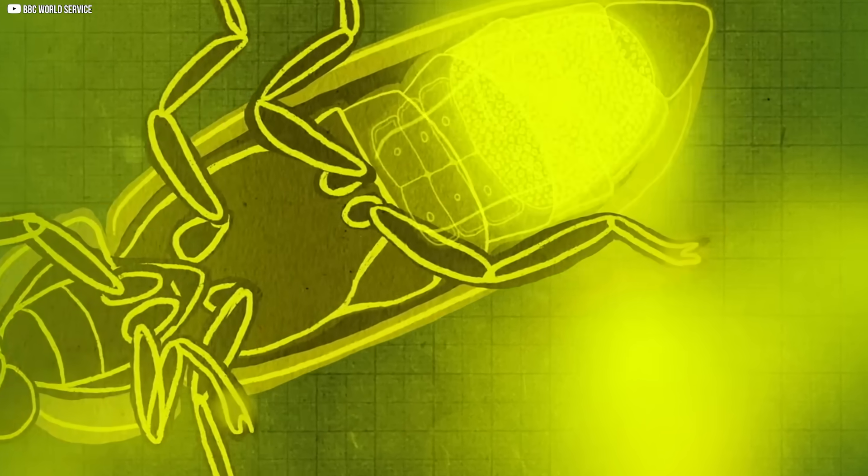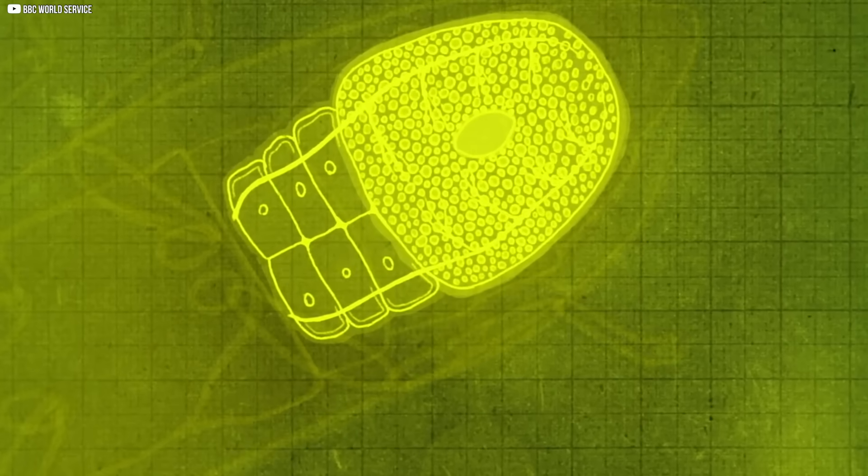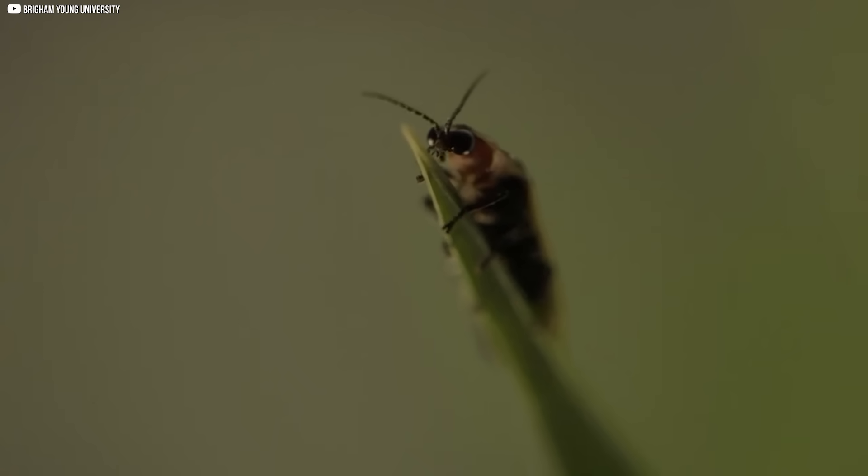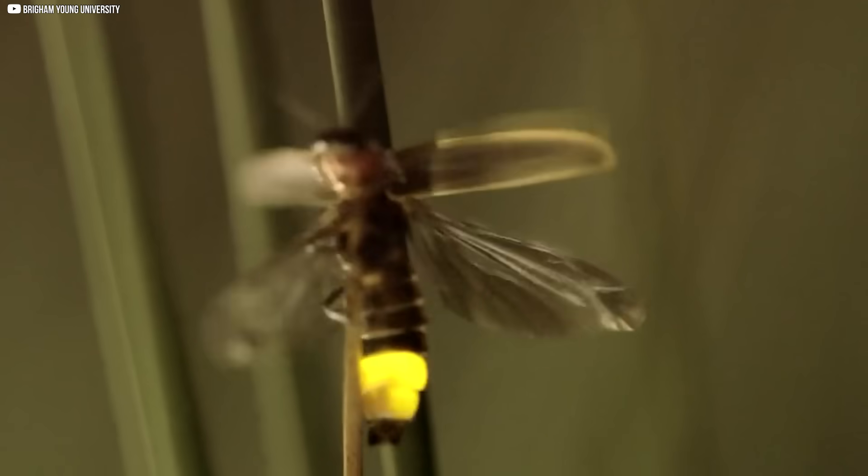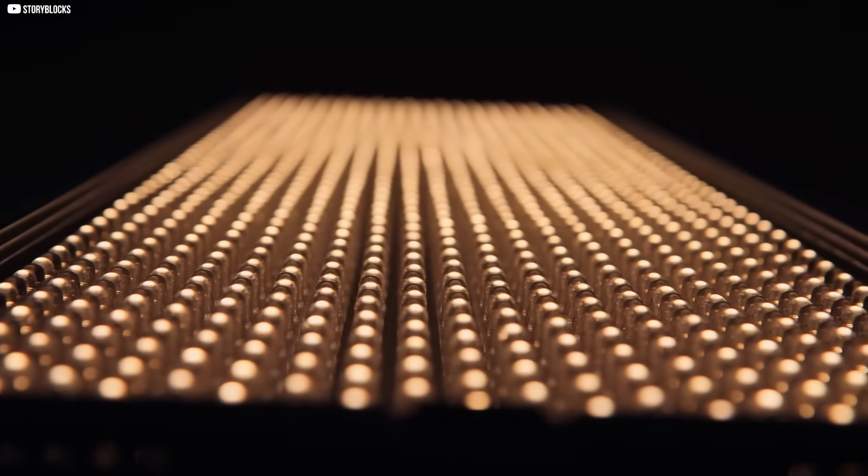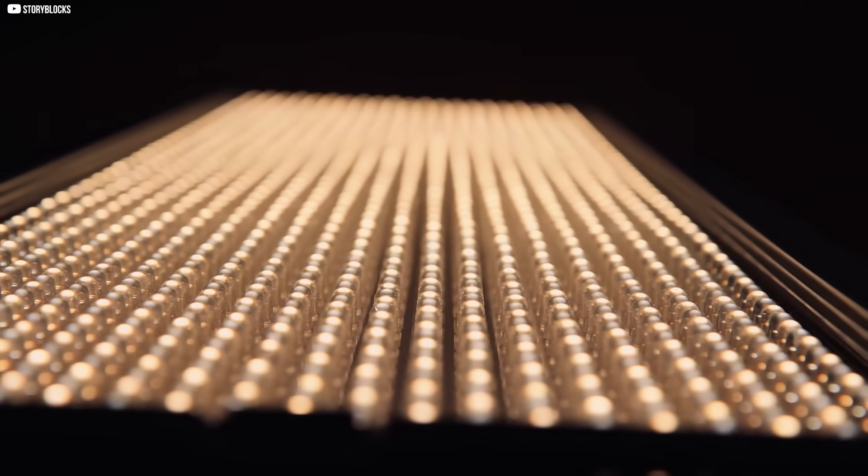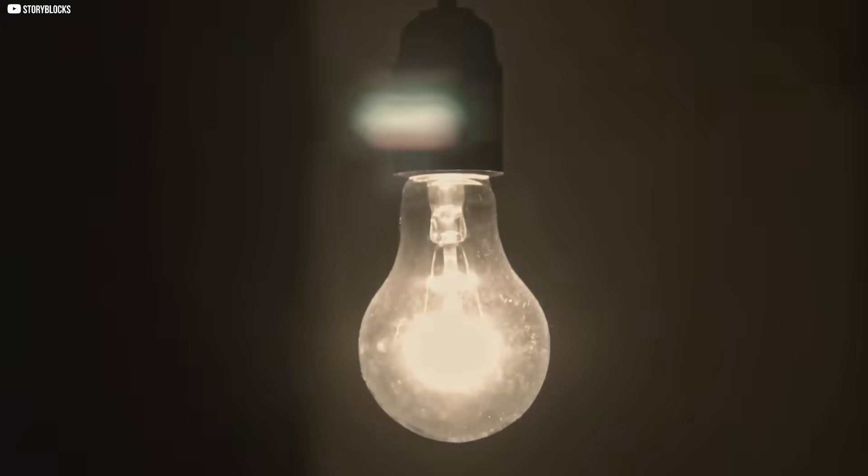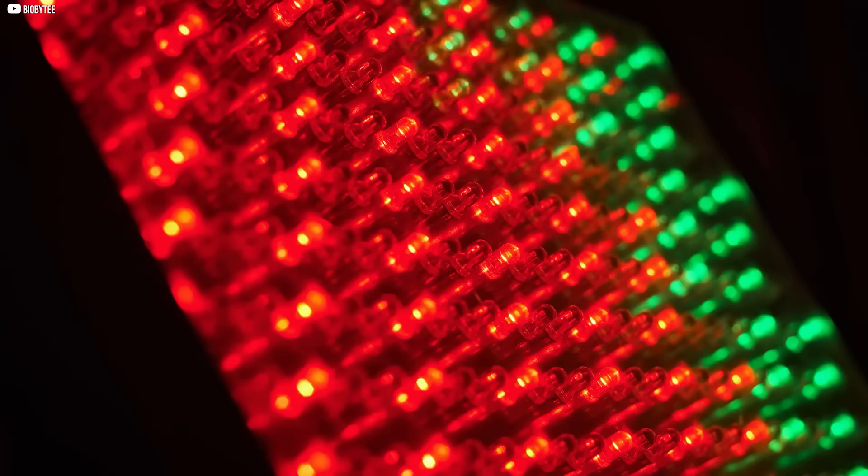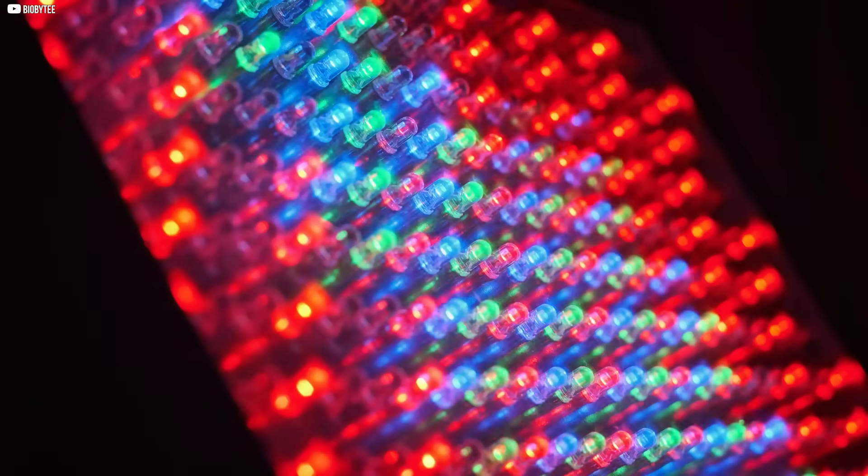Their outer shell is covered in uneven, tilted surfaces that scatter light in many directions. Instead of bouncing back, more light finds a path through. This kind of asymmetry disrupts total internal reflection. It introduces randomness, variations in angle and depth that increase the odds of escape. The result is a much brighter, more visible glow, without increasing energy use.